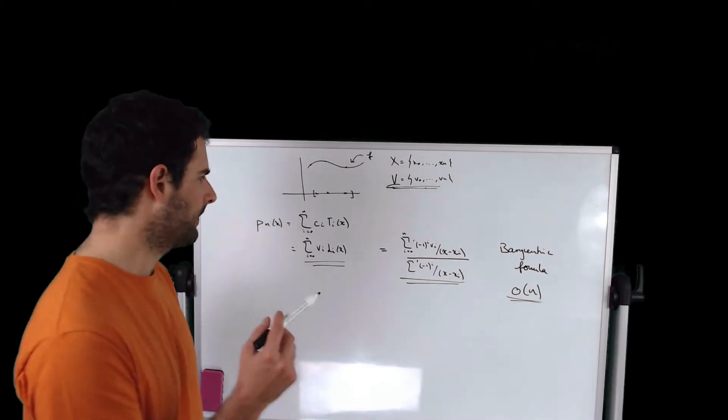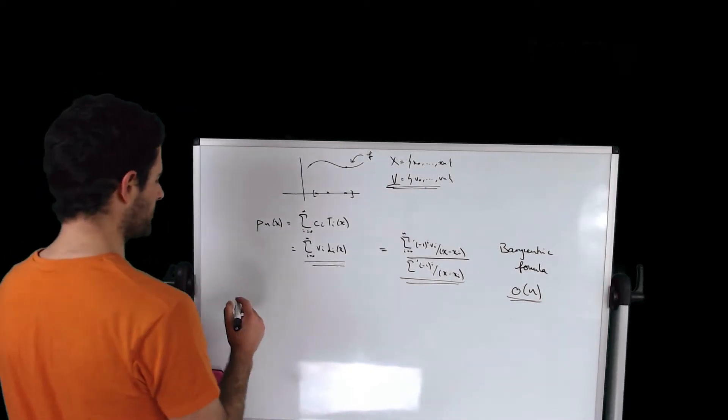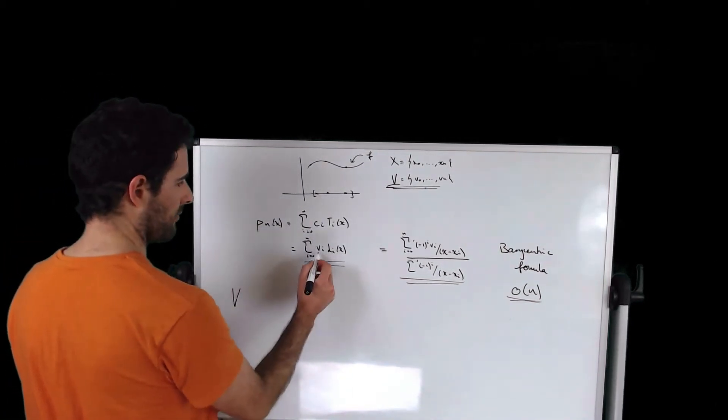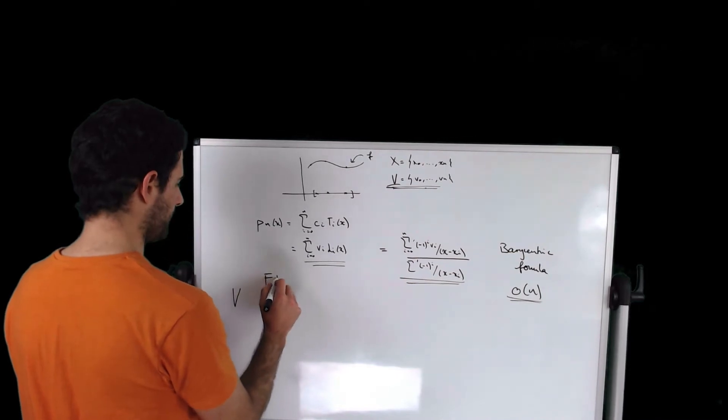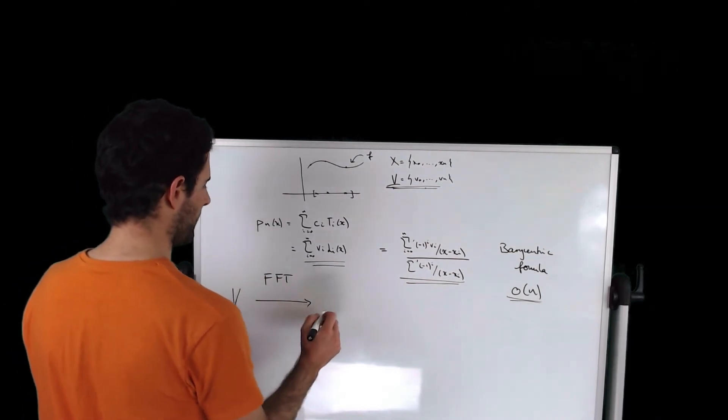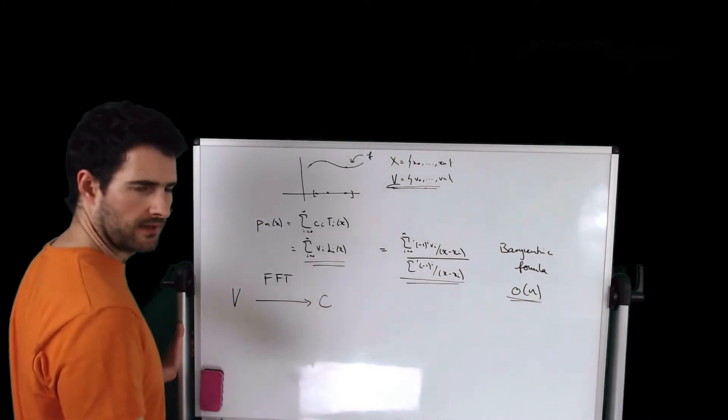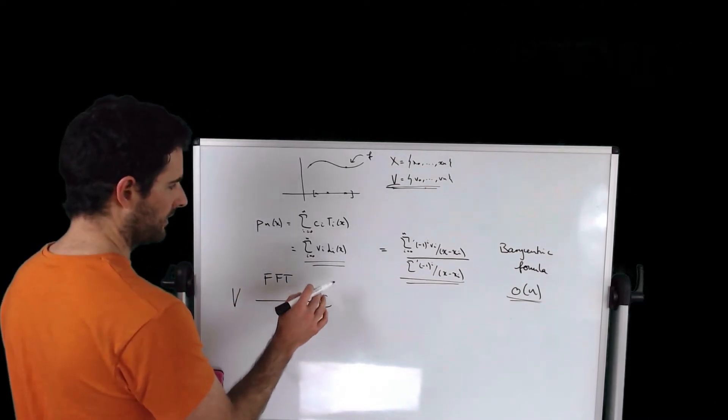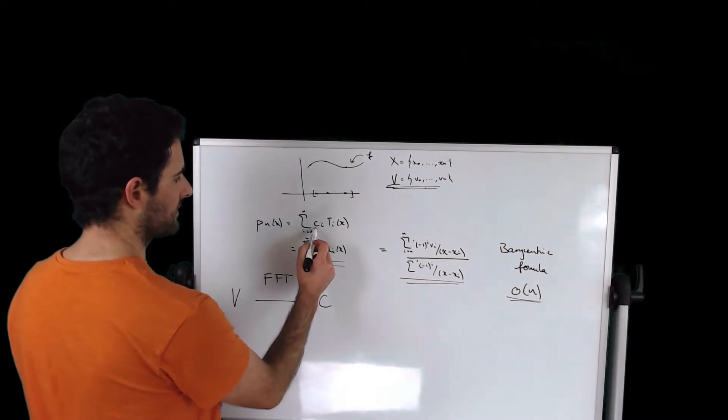Now if we apply the Fast Fourier Transform to the set v of coefficients vi, which is a pretty quick algorithm, we obtain a set c that consists of all the coefficients ci.